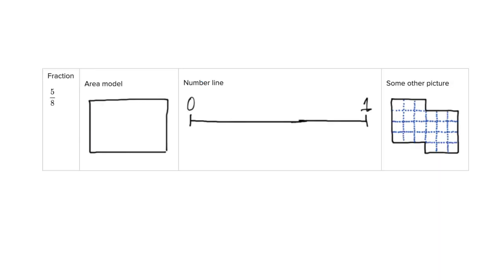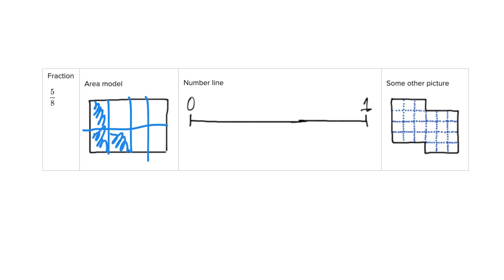Just more practice. Five-eighths means we cut this area into eight equal sized pieces. There are my eight pieces, and to shade in five of them I just pick any five: one, two, three, four, five. They don't even have to be next to each other. There's my five-eighths area model.